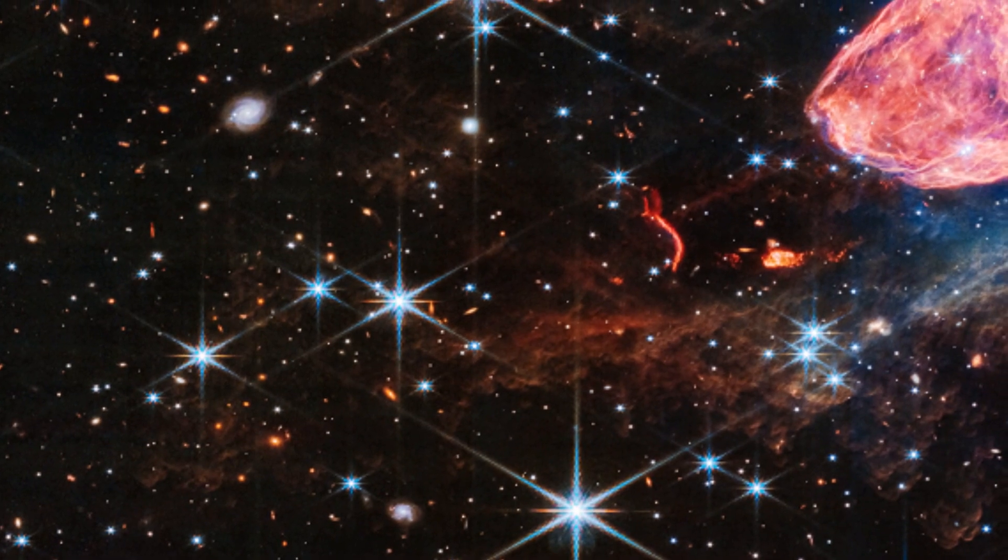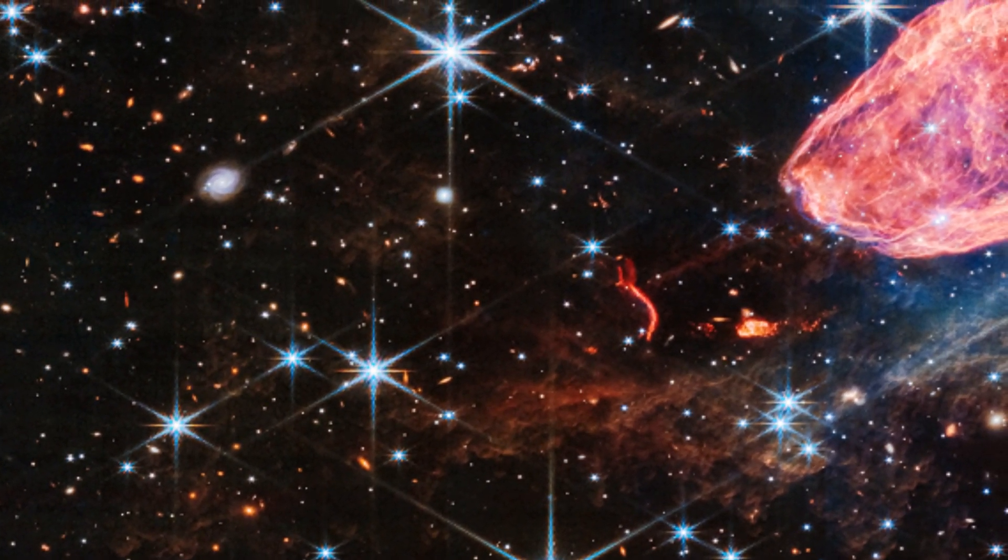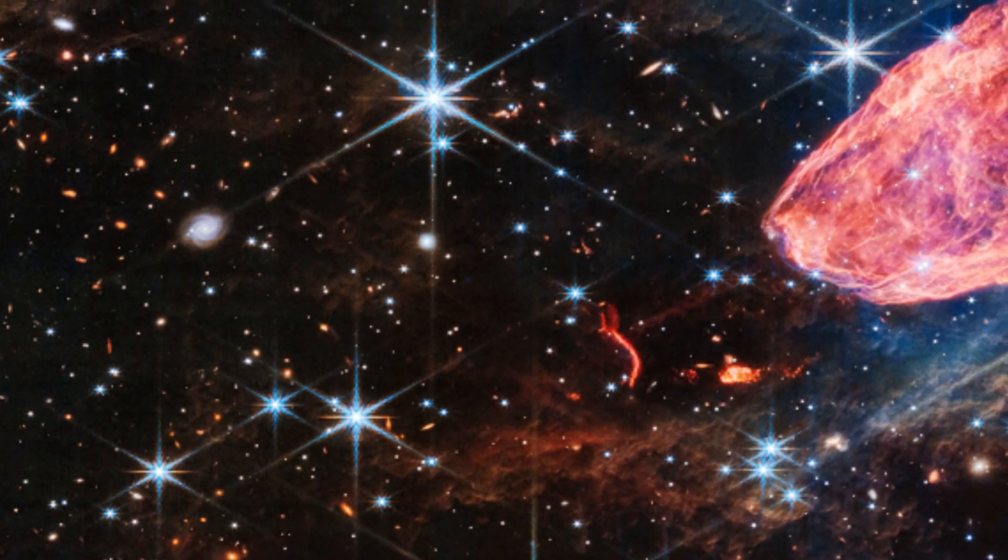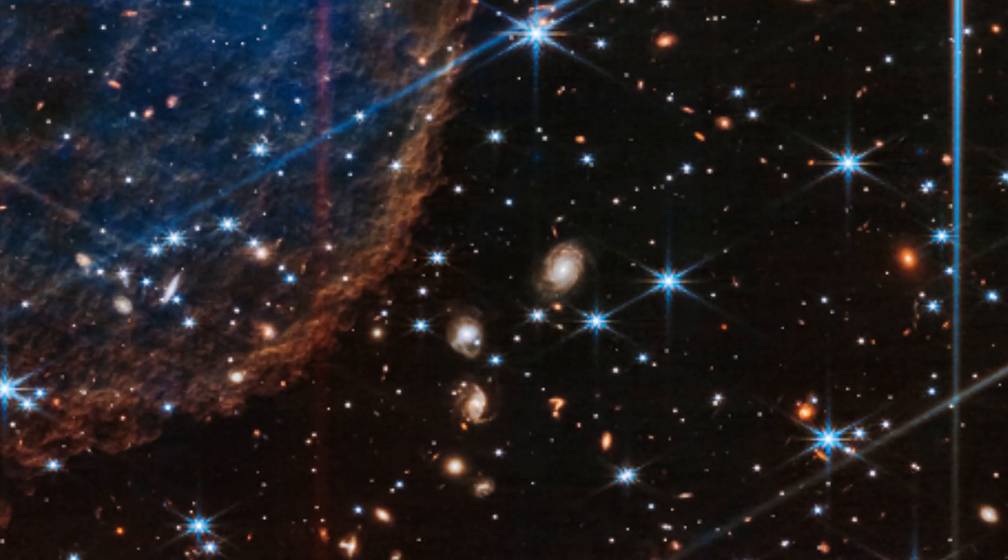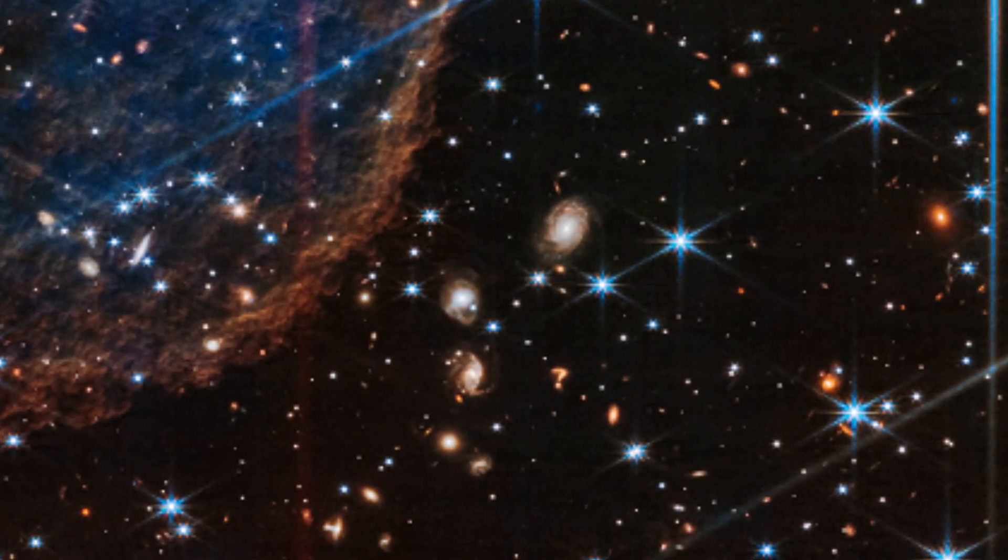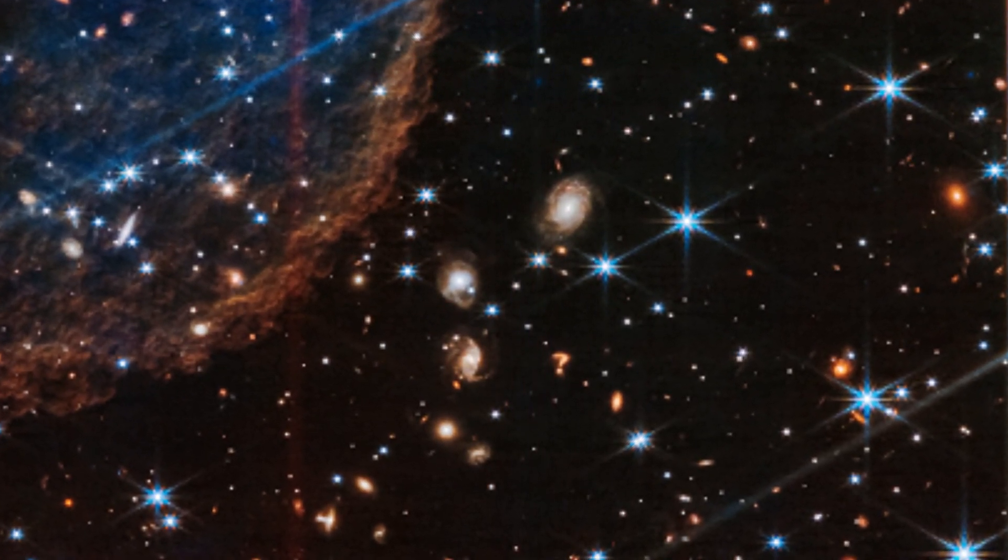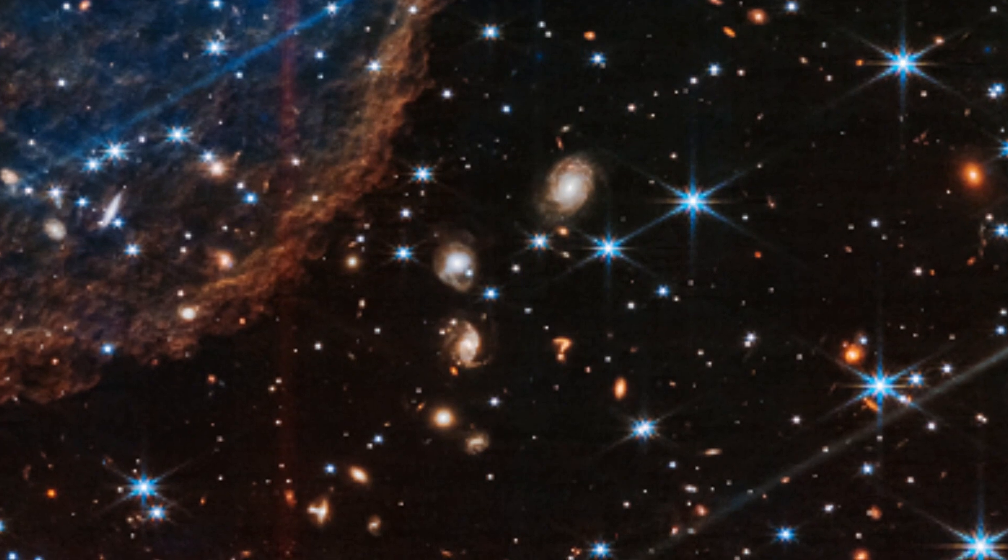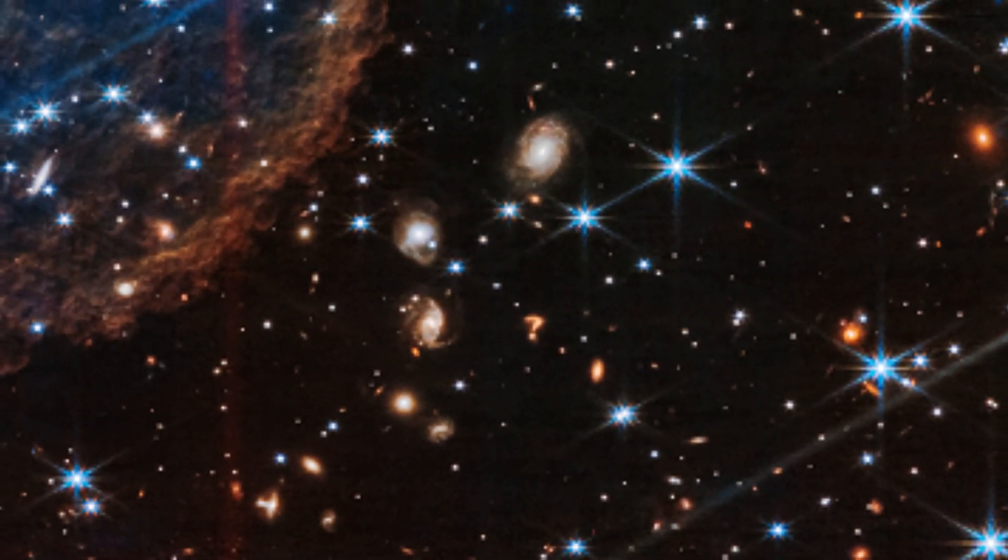Webb's composite near-infrared camera image is made up of several exposures highlighting distant galaxies and stars. Just below those stars is an object resembling a giant cosmic question mark. This object could be a faraway galaxy, or maybe two galaxies that are merging. Their merger might have distorted their shape into a question mark.